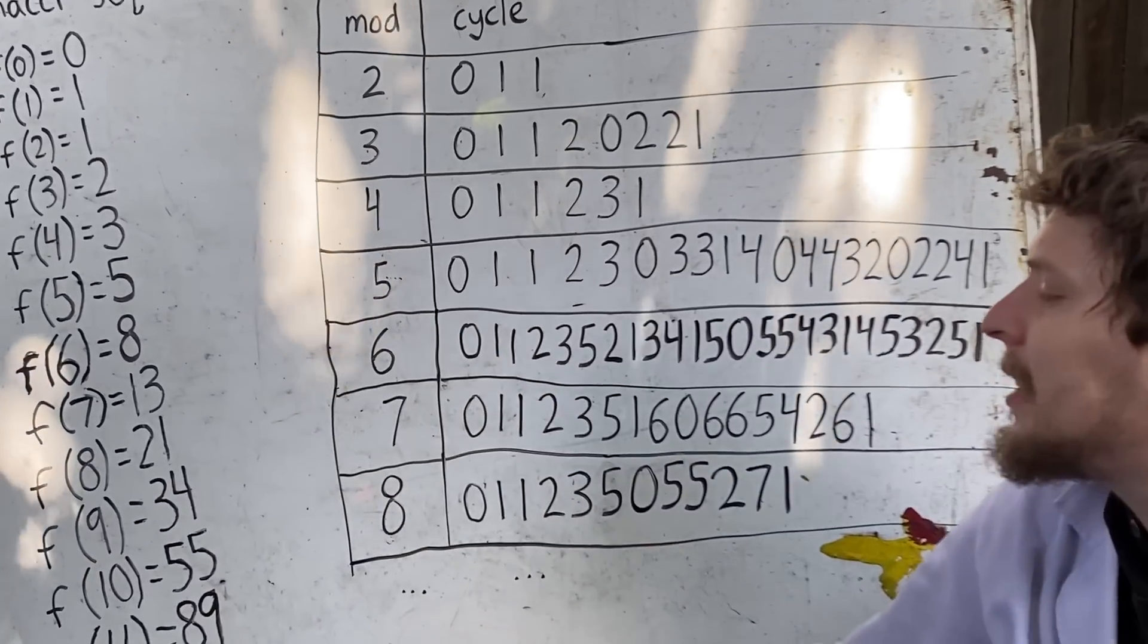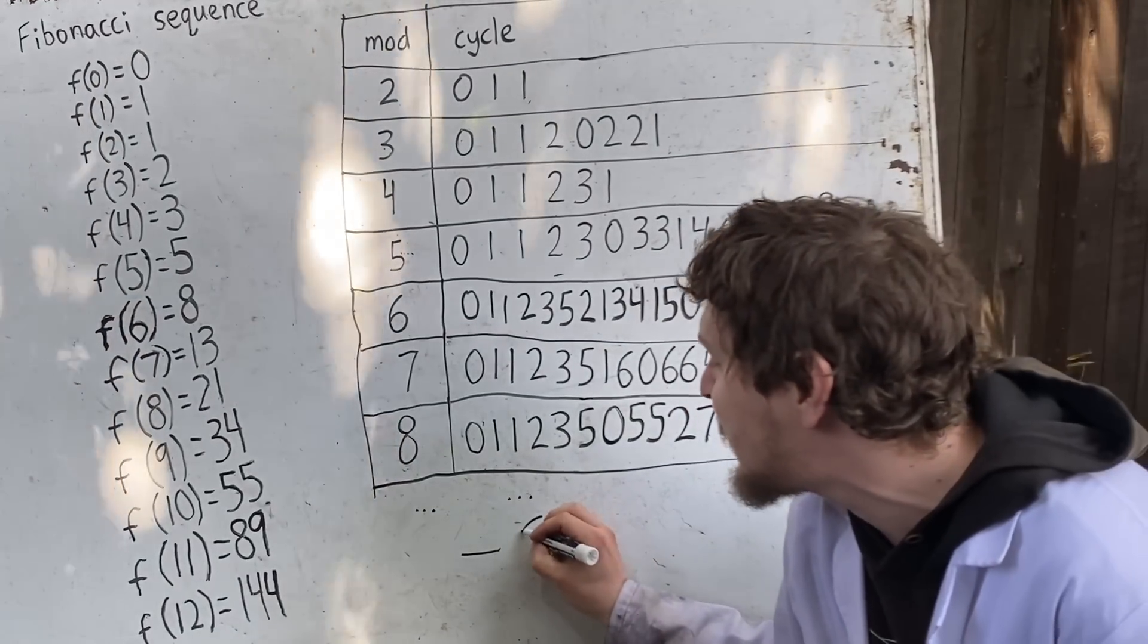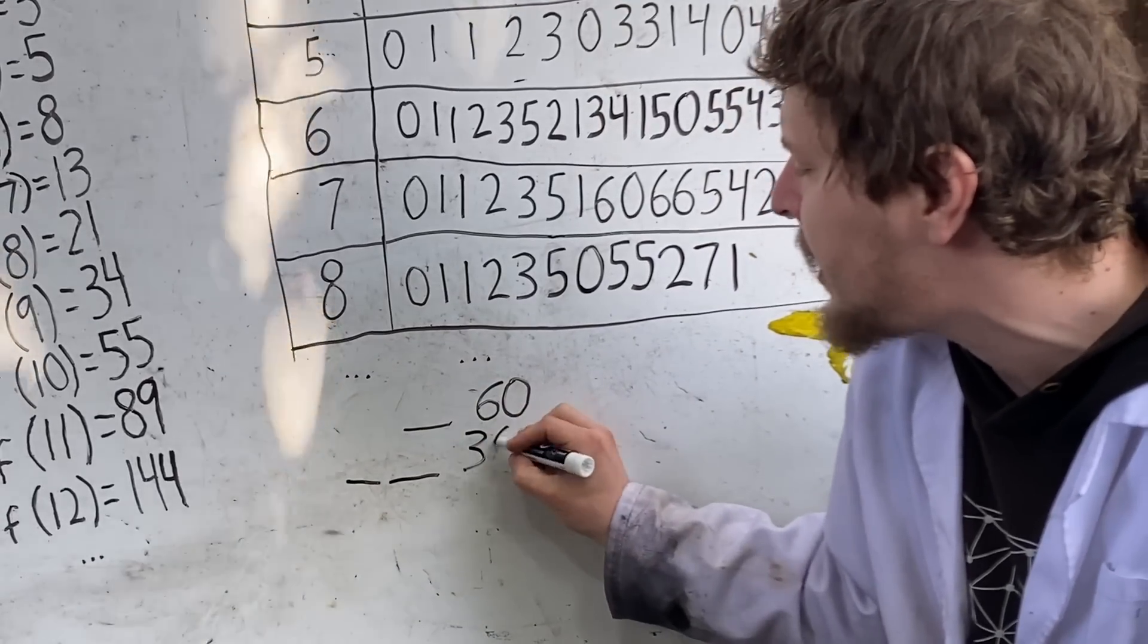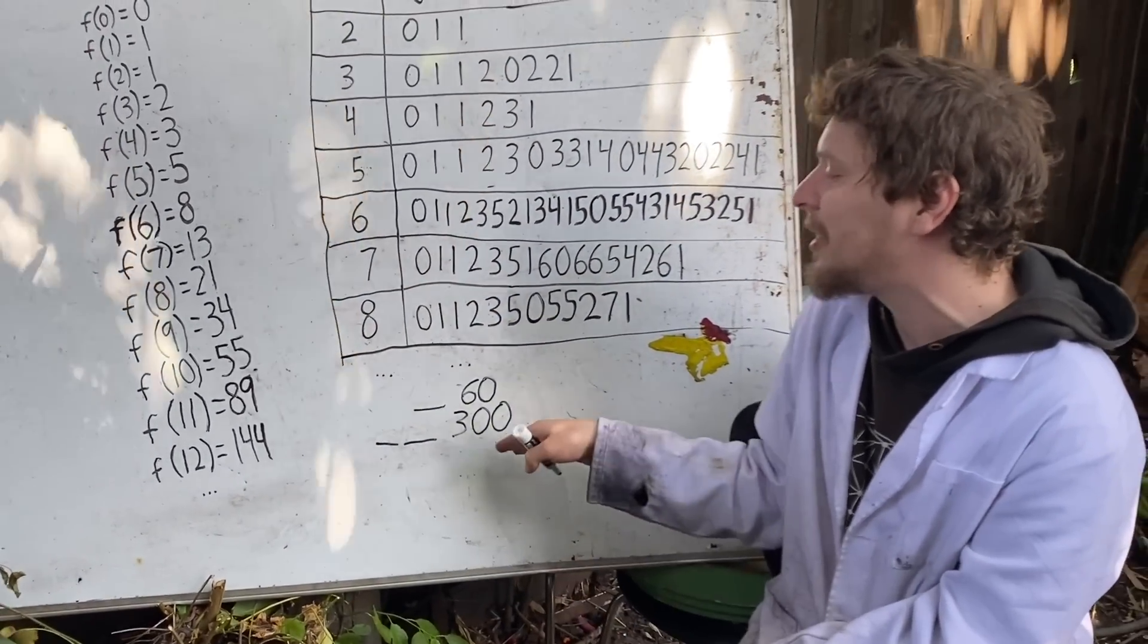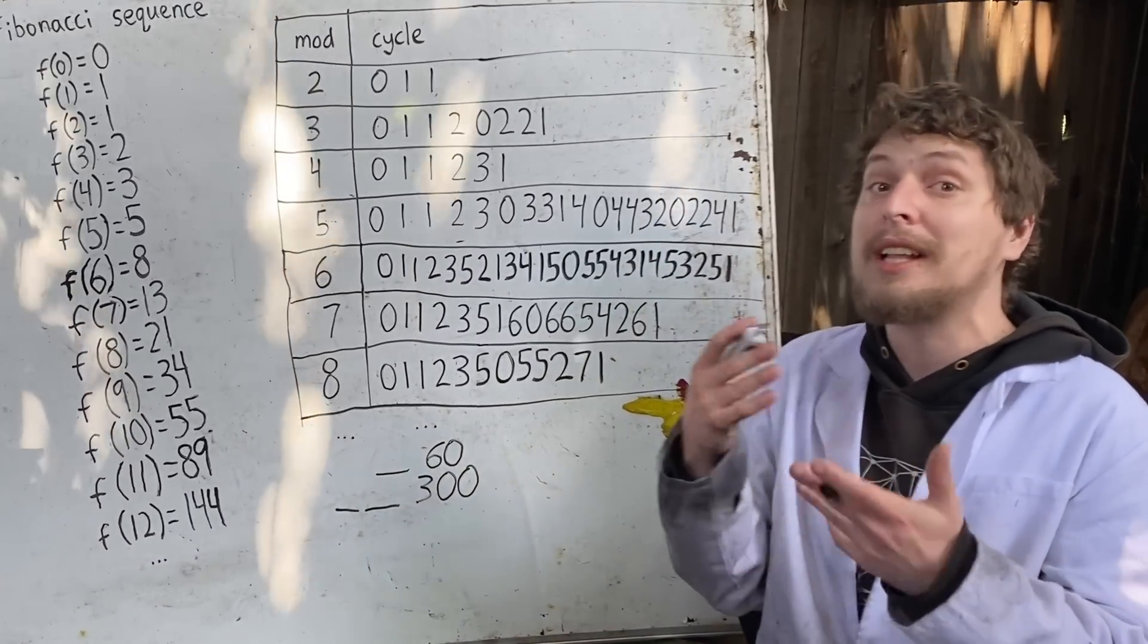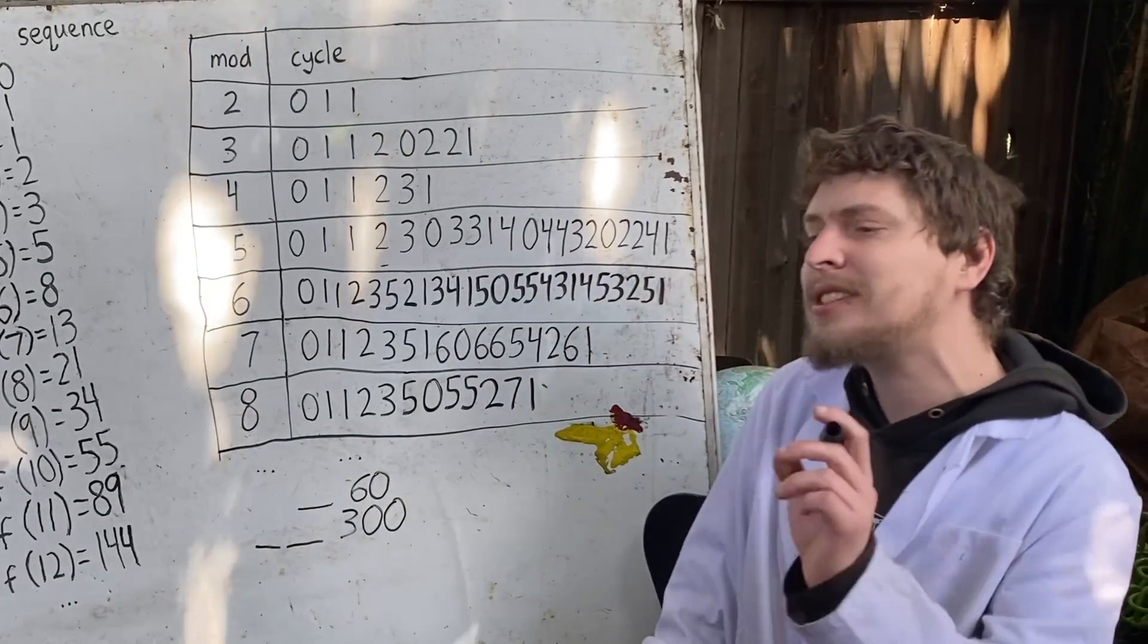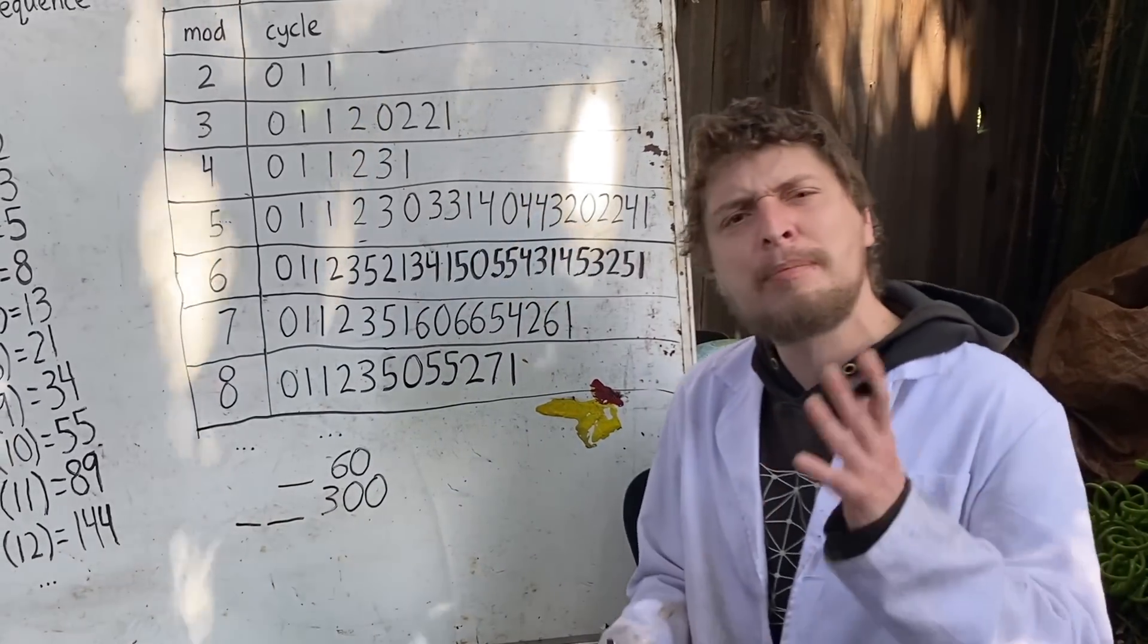Here are the cycles that the Fibonacci sequence loops in in different mods. And these are also the cycles of last digits that would repeat if we looked at the Fibonacci sequence in that given base. And up in mod 10 or the last digit of base 10, we saw that the cycle was 60 in length and that we could also find a cycle of the last two digits that was 300 in length. That's because the mod 100 cycle is 300 numbers before it repeats.